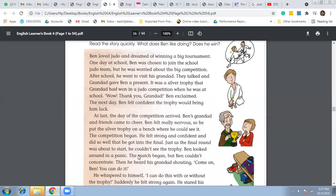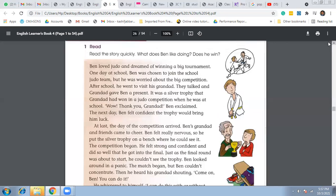Because he was thinking the trophy would bring him good luck - the granddad's silver trophy would bring good luck for him. That's why he was looking there. But when he didn't see the trophy, he was confused, he was nervous. And then he heard the granddad shouting, 'Come on Ben, come on Ben, you can do it!'